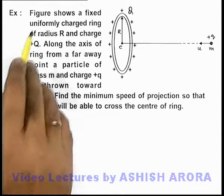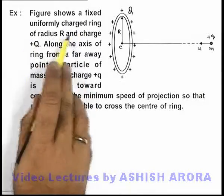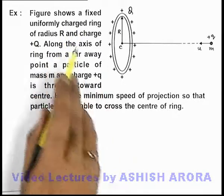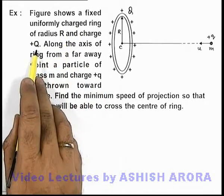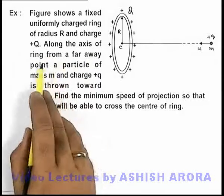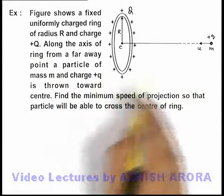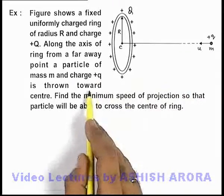In this example, the figure shows a fixed uniformly charged ring of radius R and charge +Q. Along the axis of the ring from a far away point, a particle of mass m and charge +q is thrown toward its center.